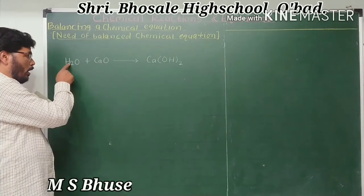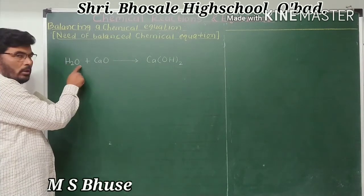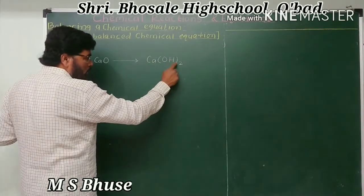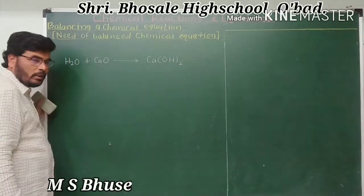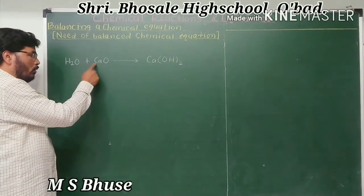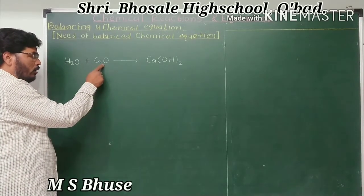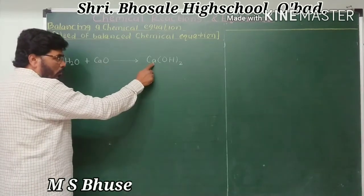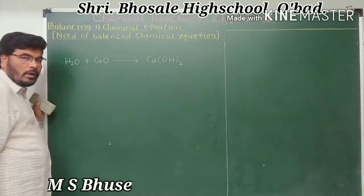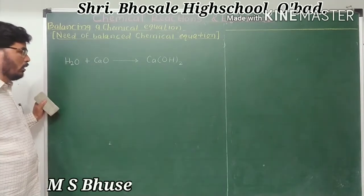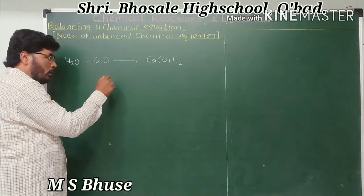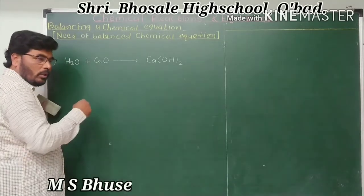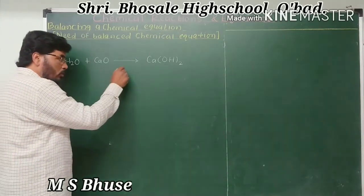On the reactant side, hydrogen is in the form of water, while on the product side, hydrogen is in the form of calcium hydroxide. On the reactant side, calcium is in the form of calcium oxide, and on the product side, calcium is in the form of calcium hydroxide. Hence, during a chemical reaction, atoms can neither be created nor destroyed, but atoms undergo rearrangement.